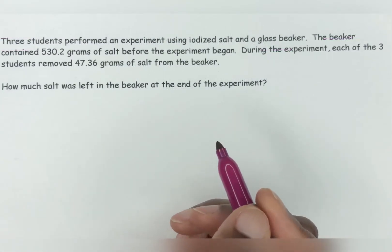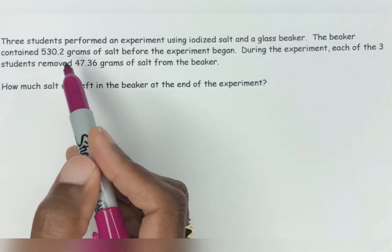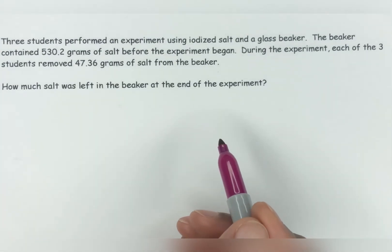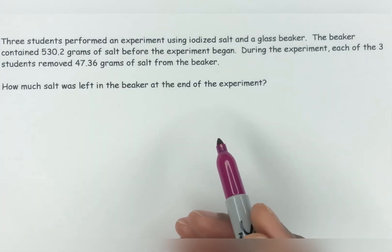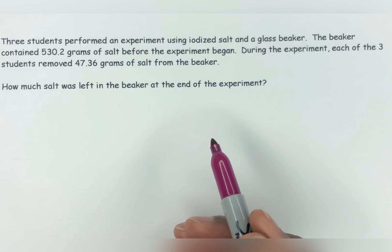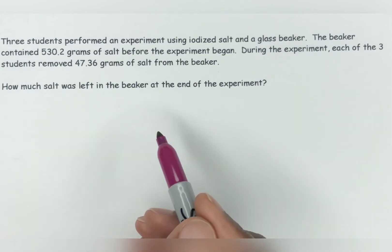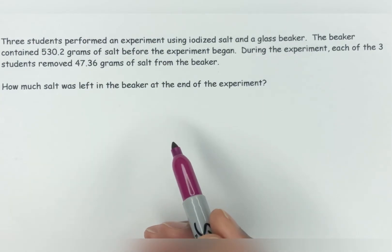Let's go into this next one. So three students performed an experiment using iodized salt and a glass beaker. The beaker contained 530.2 grams of salt before the experiment began. During the experiment, each of the three students removed 47.36 grams of salt from the beaker. How much salt was left in the beaker at the end of the experiment?